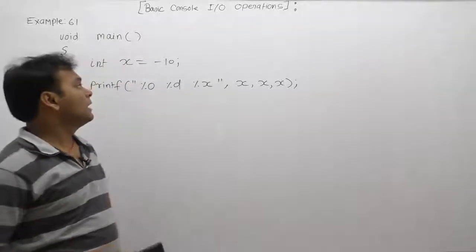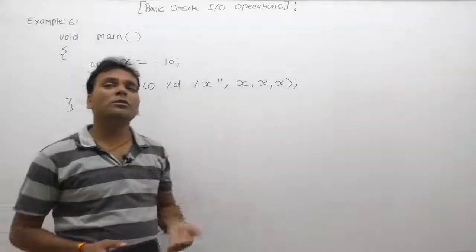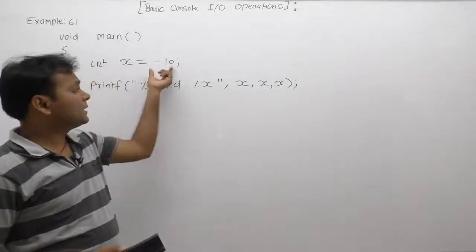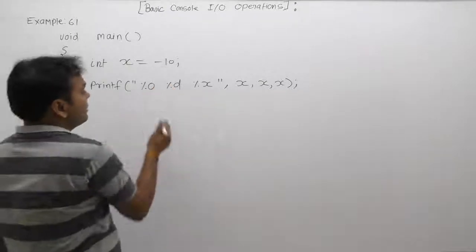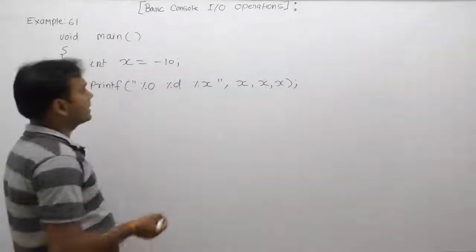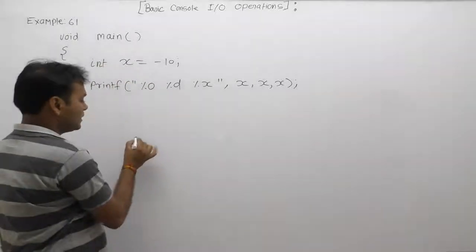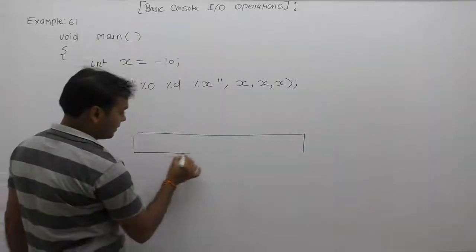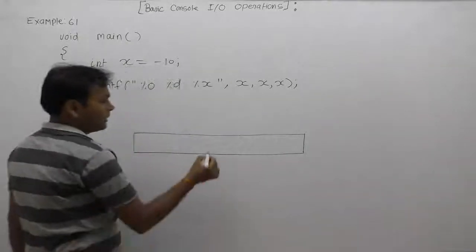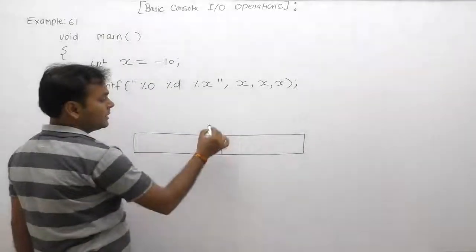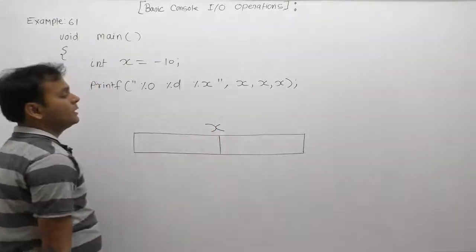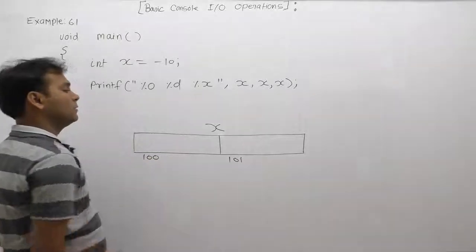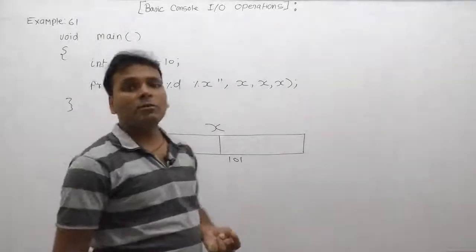Minus 10 is itself already in the form of the decimal number system, so there is no need to specify the decimal case separately. The meaning of minus 10 remains minus 10. First of all, we are creating variable x. The data type of x is integer. According to integer data type, it will take two bytes inside memory.